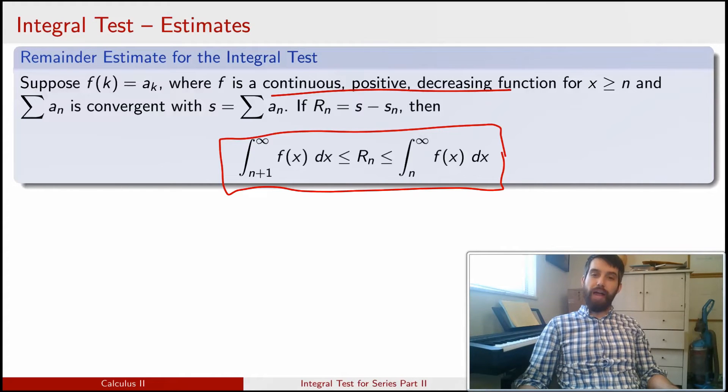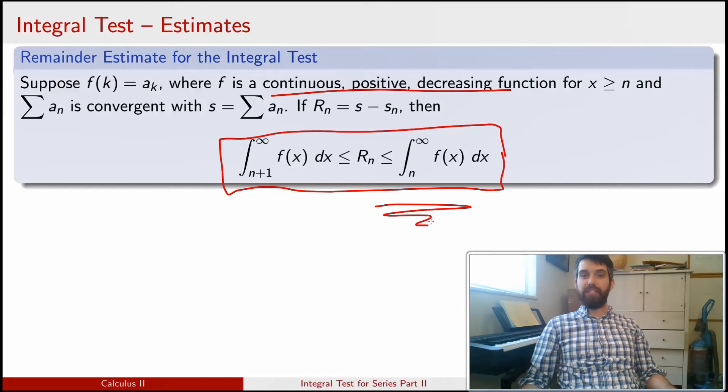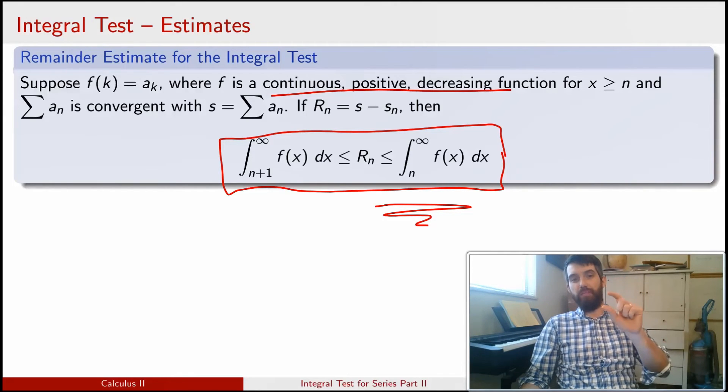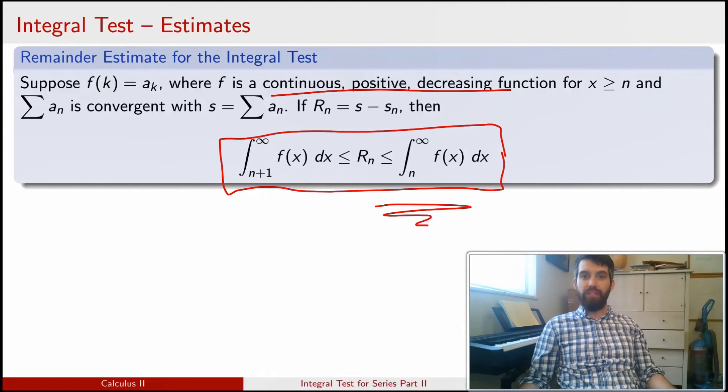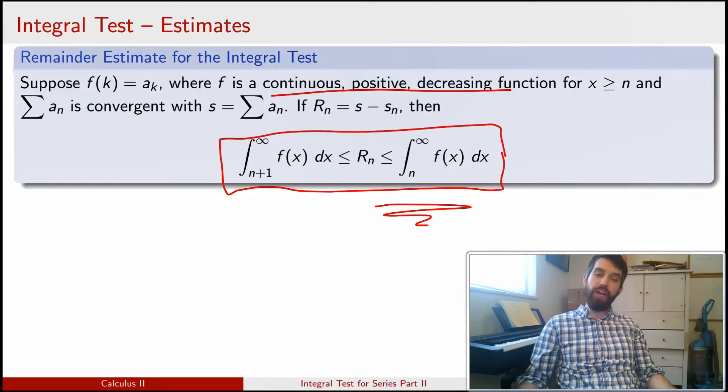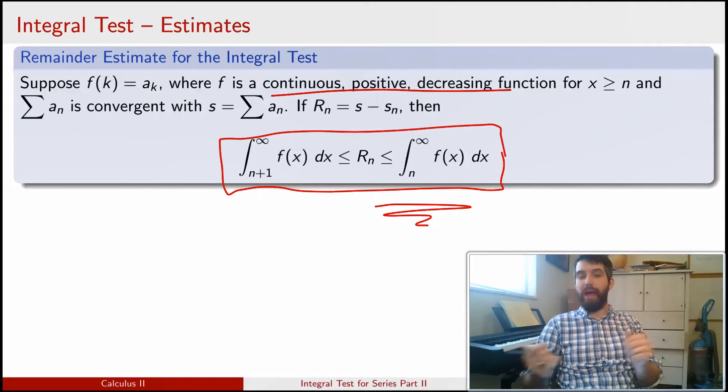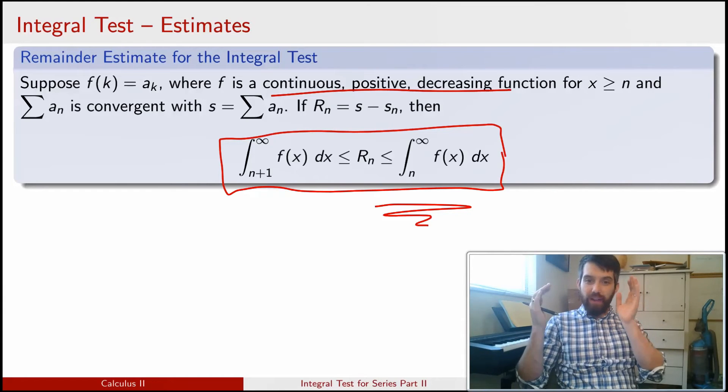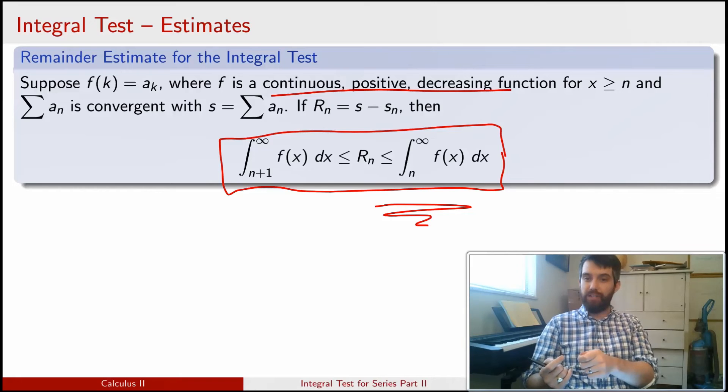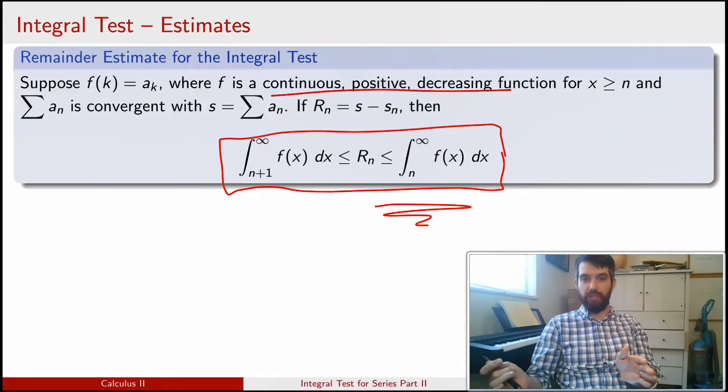Now, the main way that we're actually going to use this is actually the right-hand side. What we really want to do is we want to have our remainder be well controlled. We want it to be not that large of a value. What I can do is figure out how big this right integral is. I can figure out how big the integral from n to infinity is. Then, as long as that number is something small, whatever my accuracy needs to be based on my application that I'm doing, then if I demand that level of accuracy, it's going to tell me the n I need to use, and my remainder is always going to be less than that required level of accuracy.